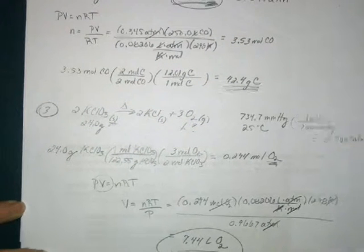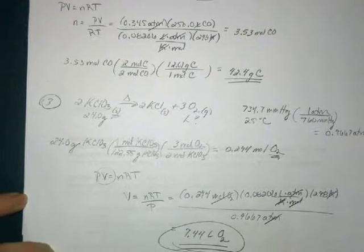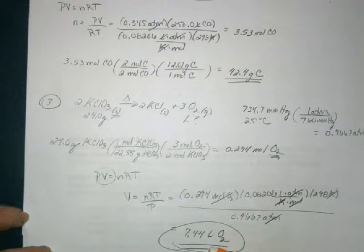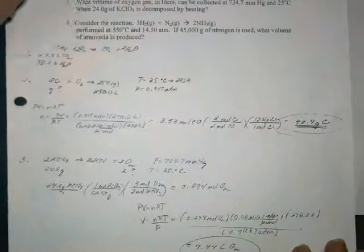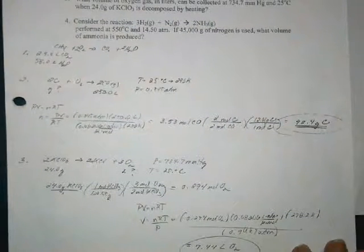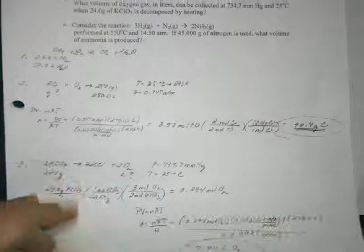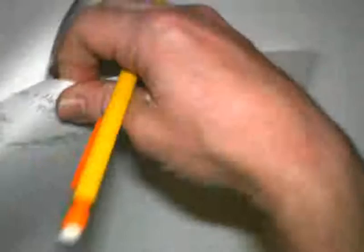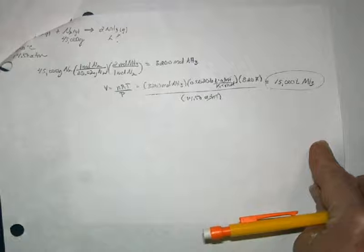If you have any questions, please don't hesitate to forward them my way. Just to show — here was the work that I provided you in your packet for number two, number three, but also for number four. The answer for number four is 15,000 liters of ammonia.